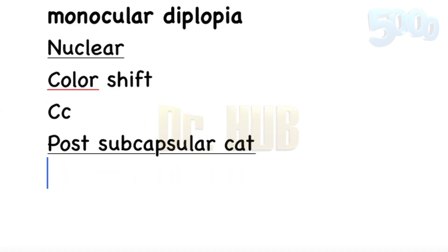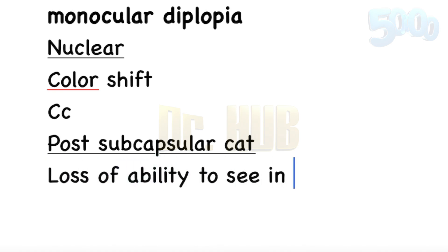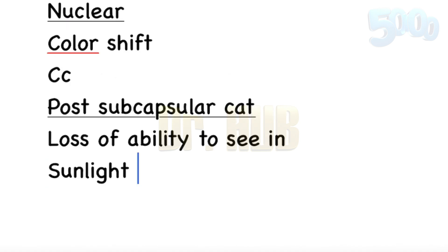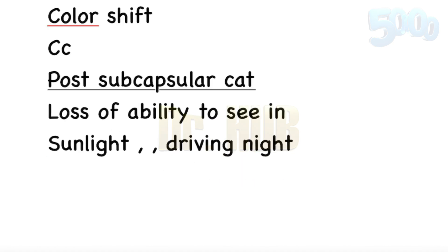Next we move on to posterior subcapsular cataract. In posterior subcapsular cataract and nuclear cataract, there is loss of ability to see objects in bright sunlight. There is also difficulty being blinded by headlamps when driving at night — so driving issues at night are associated with posterior subcapsular and nuclear cataract.